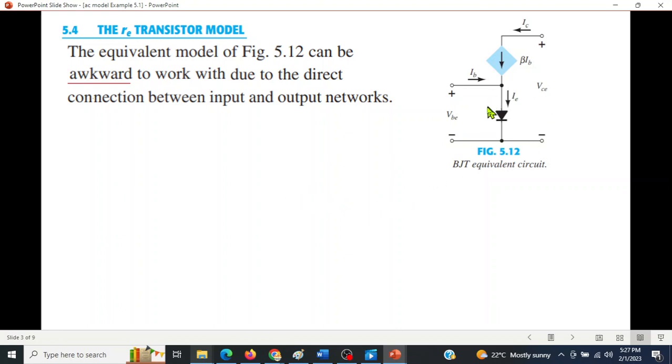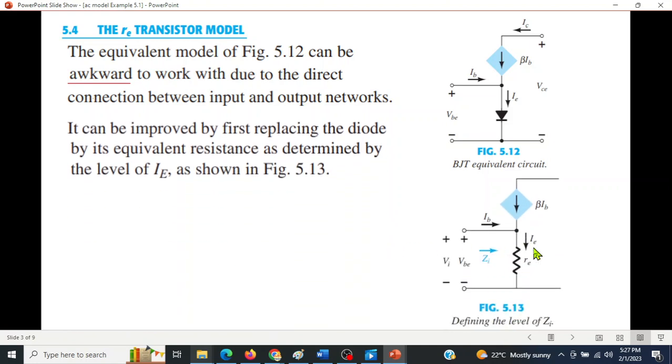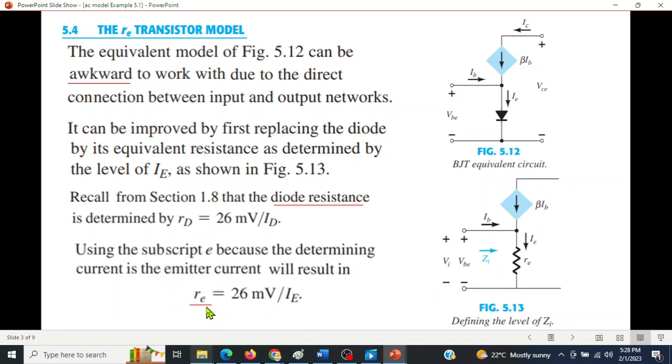We replace the diode with a resistance. This diode is replaced with resistance and we are writing it r_e. Actually the resistance in case of a diode is called r_d and the formula for this is r_d = 26 mV divided by the diode current. In this case we'll call r_d as r_e, so r_e = 26 mV divided by the current I_E.